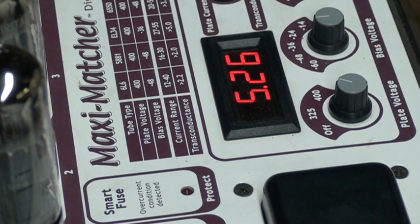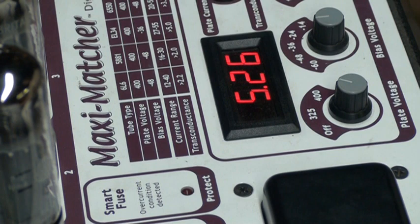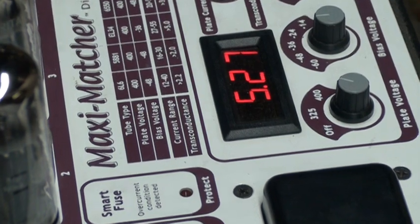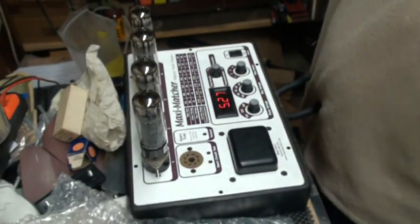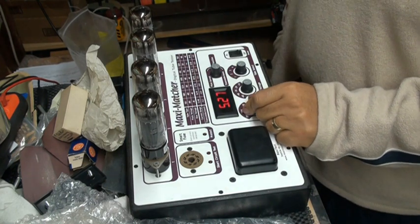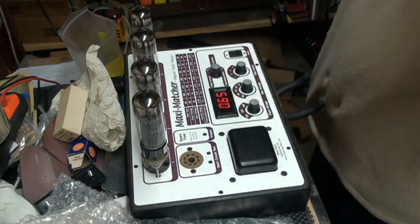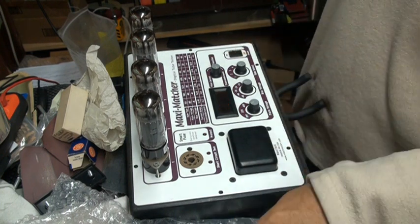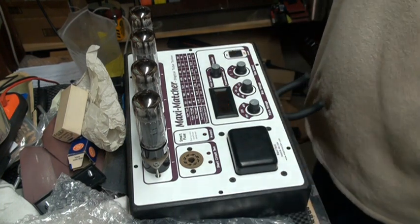What I'm gonna do is I'm gonna turn it off - bring the voltage down, and then I'm gonna remove these tubes, turn it off right now, and put these other four tubes that I have here.